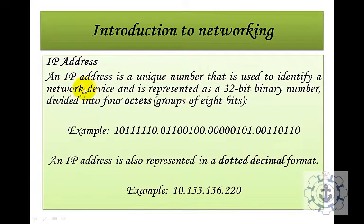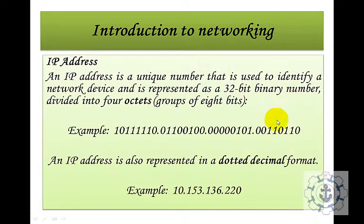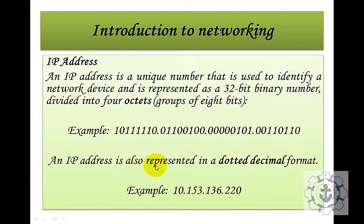Next comes IP addresses. An IP address is a unique number used to identify a network device, and is represented as a 32-bit binary number. Each networked device can be identified with the help of its IP address. An IP address is also represented in dotted decimal format — for example, 10.153.136.220.